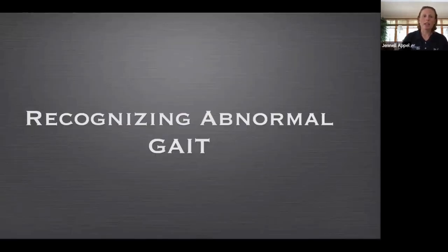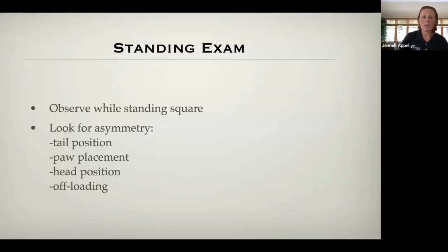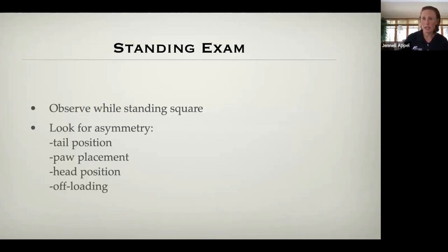So how do we recognize abnormal gait? I take the dog through my normal orthopedic exam, from a sitting exam into the gait itself. The first thing I do is look at the dog in a standing position, essentially always looking for asymmetry — no matter how we're examining the dog. In a stand, that can look like offloading of a limb, head position changing from one side to the other, paw placement being different from one side of the body to the other, and even tail position.